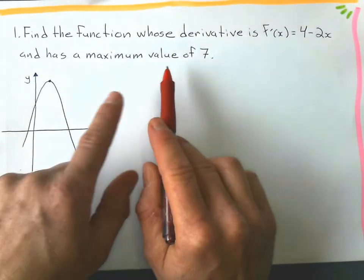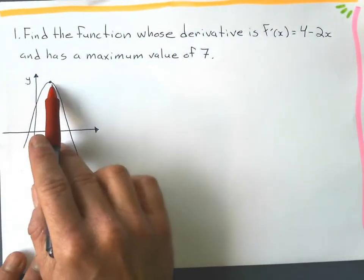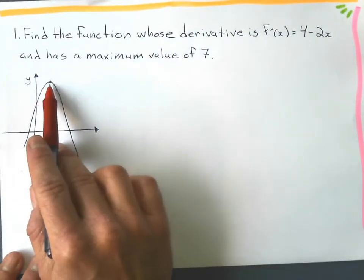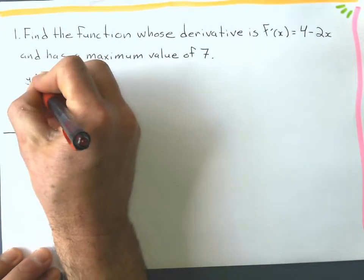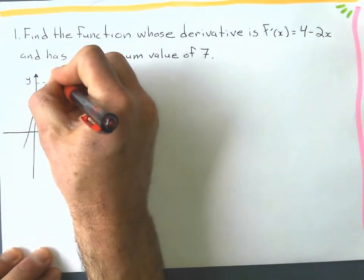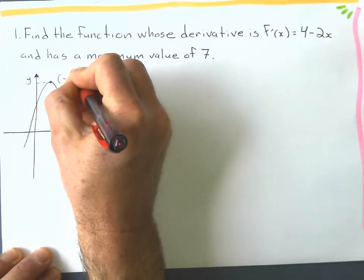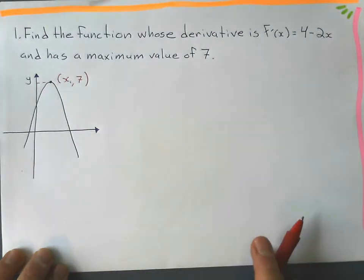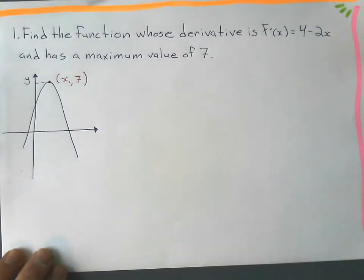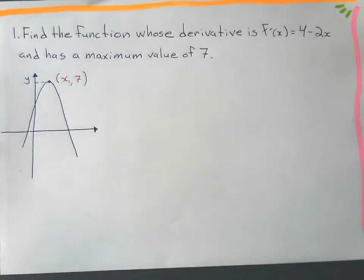First of all, let's go over what this maximum value of 7 means. It means that on our curve, the y-value is 7. So this point here is (x-something, 7). That's what I know so far, and the first thing I want to do is find that x-value.